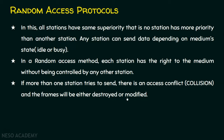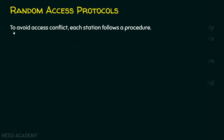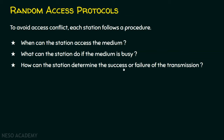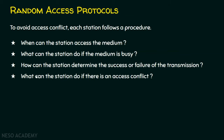Since there is a possibility of collision in random access protocols, it must be resolved. To avoid access conflict or collision, each station must follow a procedure, which is the nature of the protocol. This procedure addresses: when can the station access the medium, what can the station do if the medium is busy, how can the station determine the success or failure of transmission, and what can the station do if there is an access conflict. All these questions are addressed by the random access protocol procedure.